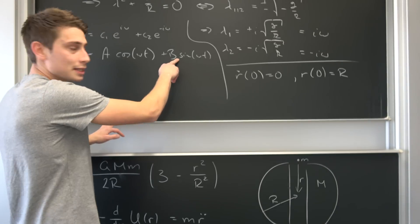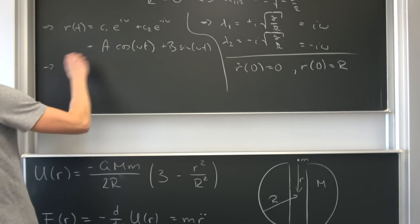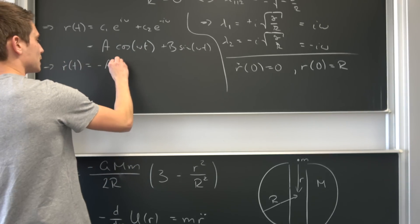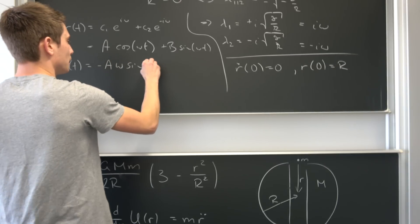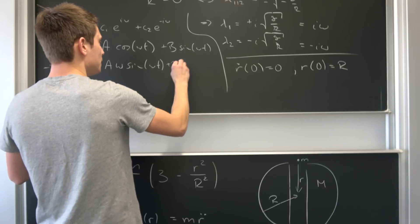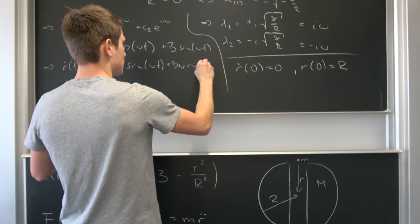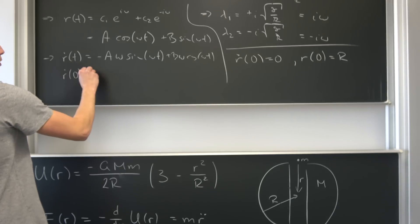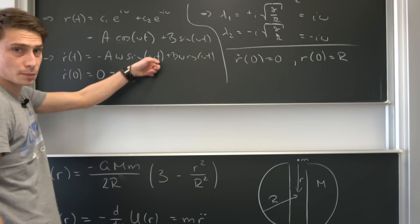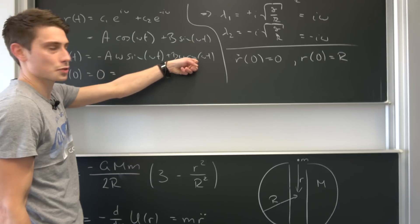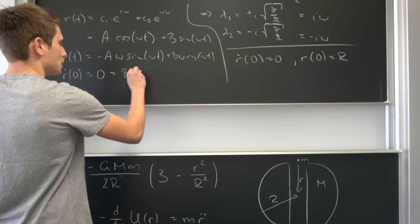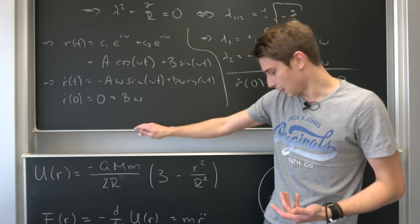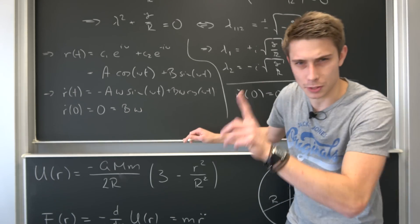So why not differentiate this right here and plug zero in and see what we get. Meaning, r dot of t is now nothing but negative a times omega sine omega times t plus, and now we have b times omega, and then we have the cosine of omega times t. If we plug zero into here, so r dot of zero being equal to zero, we get this part is going to vanish, meaning we are going to get a cosine of one, b times omega. But our frequency can't be equal to zero actually, so b needs to be equal to zero. And I don't have any space left. I'm going to see on the next blackboard.